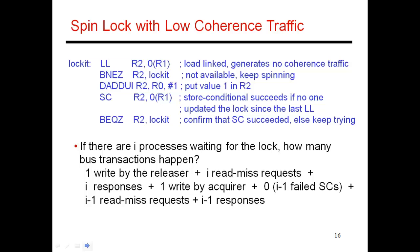This is how a load linked store conditional works, and it actually leads to less coherence traffic. When the thread releasing the lock does the write, there's one write transaction on the bus and everyone has their cache copies invalidated. If there are i-threads waiting for the lock, all of them are going to do a load linked on an invalid cache block, flag a cache miss, and issue a read miss request to get the response back. It's also possible to optimize this: if everybody is requesting the same cache block, once the response shows up, they can all accept this block and cancel their pending requests. So it's possible to optimize these i-responses into a single response.